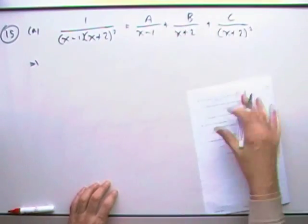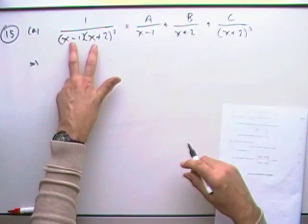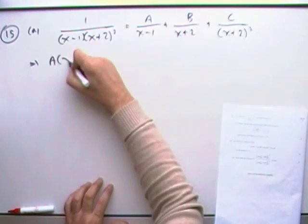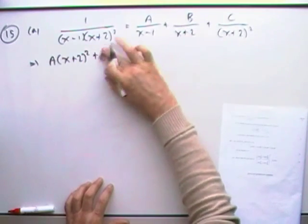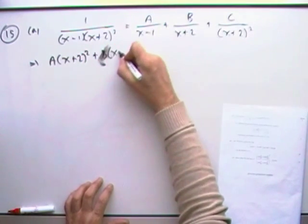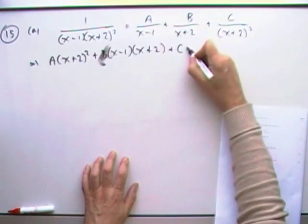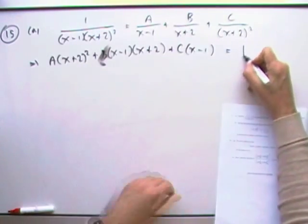Which means that multiplying throughout to get rid of fractions from both sides, so multiplying everything by x minus 1 times the bracket squared would have A requiring the whole of the square bracket, B requiring the x minus 1 and the remaining part of the bracket, C just needing the x minus 1, having the whole square bracket already, and that would just be 1.